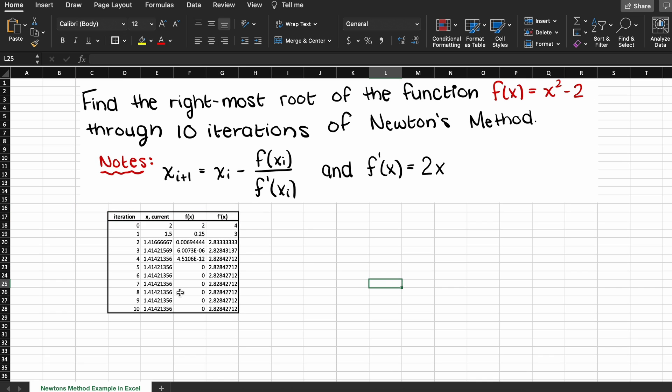If these numbers were getting significantly larger or changing in different ways, then we could probably assume that our function is diverging, which means we will never get to a proper answer, and we need a better starting guess. As you can see here, our answer is actually converging quickly and very well.